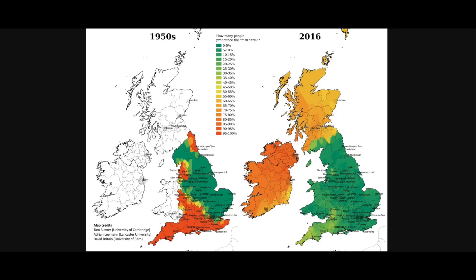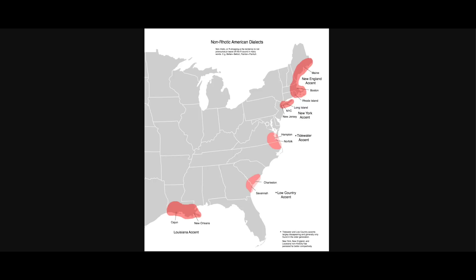Whereas Ireland and Scotland more or less do pronounce the R, or in some areas it's about 50%. So when people say that the UK is non-rhotic, that's not entirely true. In the US, you can see there are only pockets where the R is not pronounced — in Louisiana, around Charleston and Savannah, near Richmond Virginia, Norfolk and Hampton, New York, and also New England. So generally speaking, the US is rhotic, but in some areas the R is left out like it is in England.